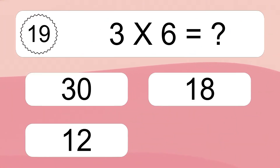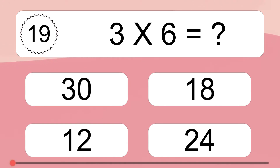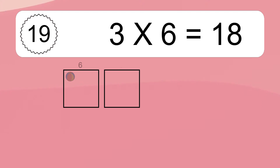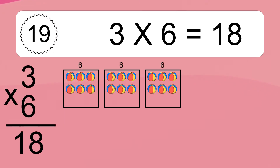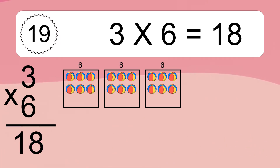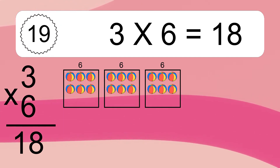Three times six equals what? Three times six equals eighteen. We have three boxes and each box has six colorful balls inside. If you count all the balls in all the boxes together, you will have three times six balls. This equals eighteen balls.